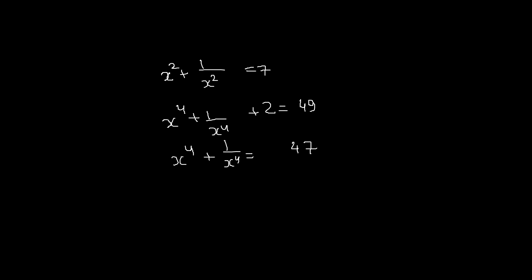Now again you take the square on both sides and you will get x⁸ + 1/x⁸ + 2 = 47². You can do this from the calculator, so you can see that this is 2209. From here you will see that x⁸ + 1/x⁸ = 2207.